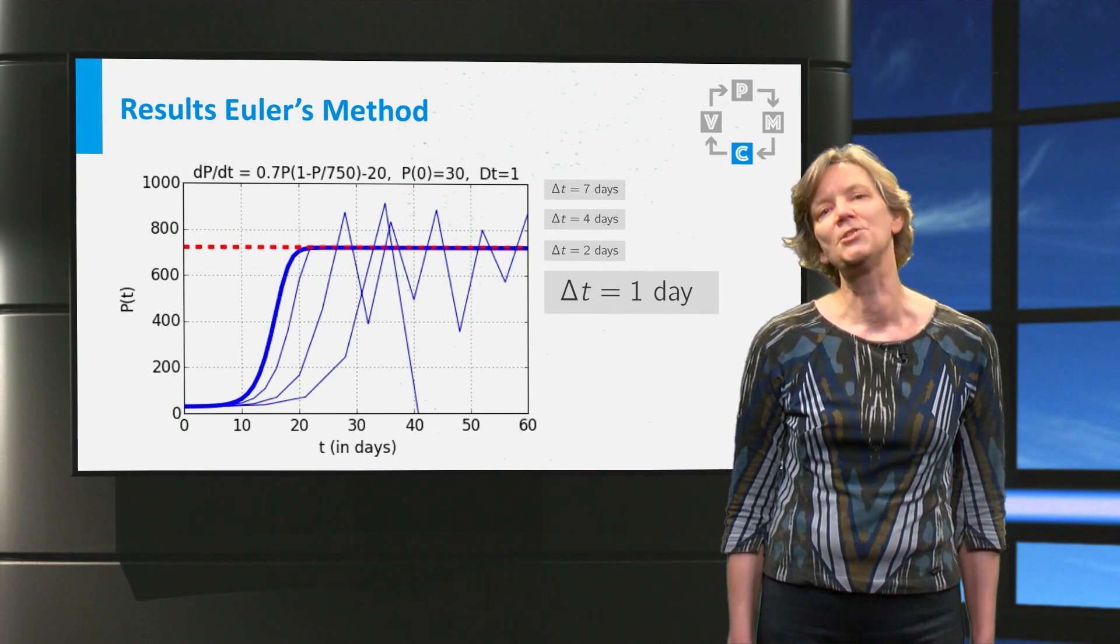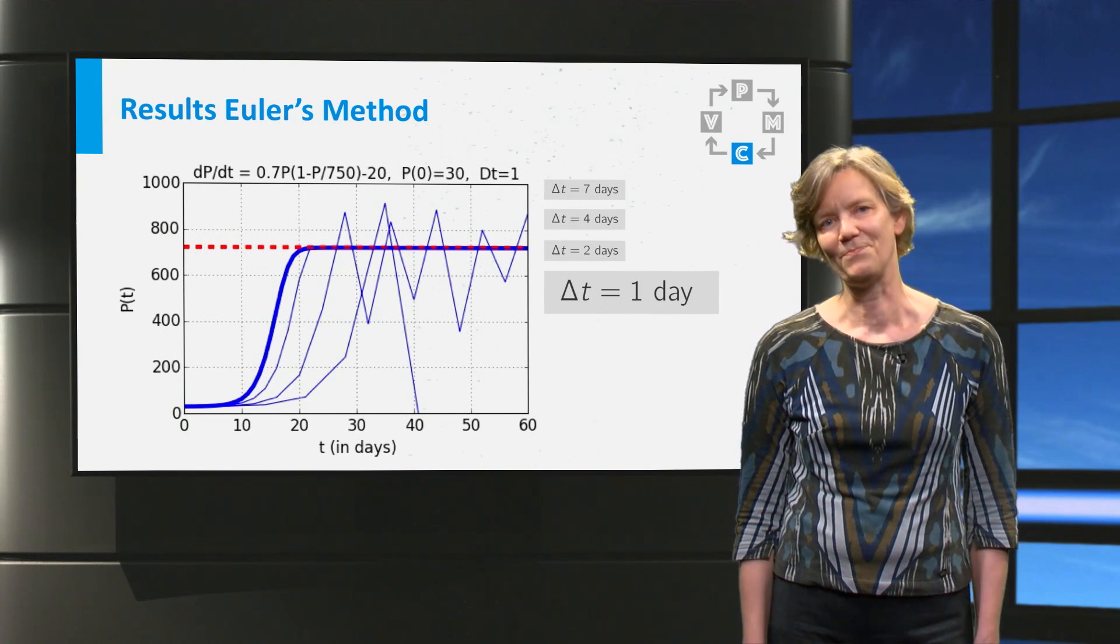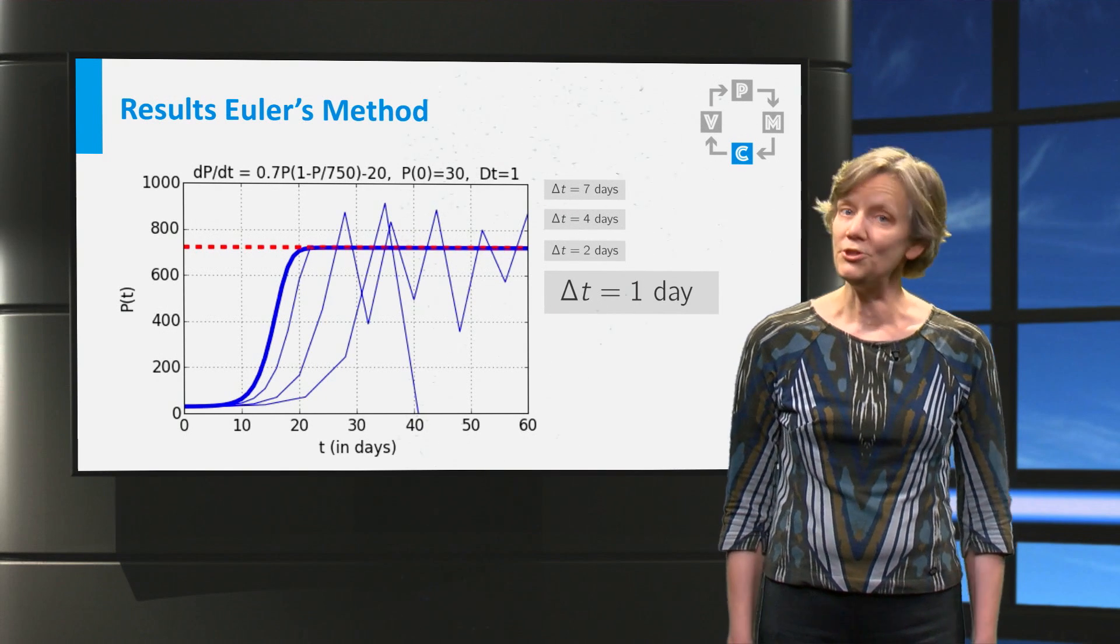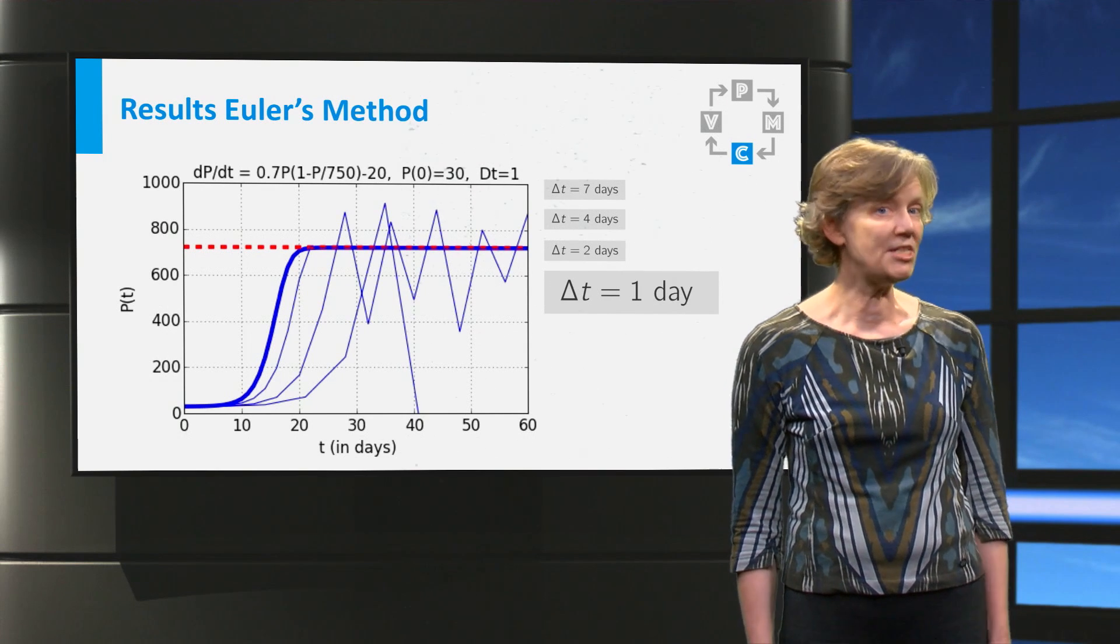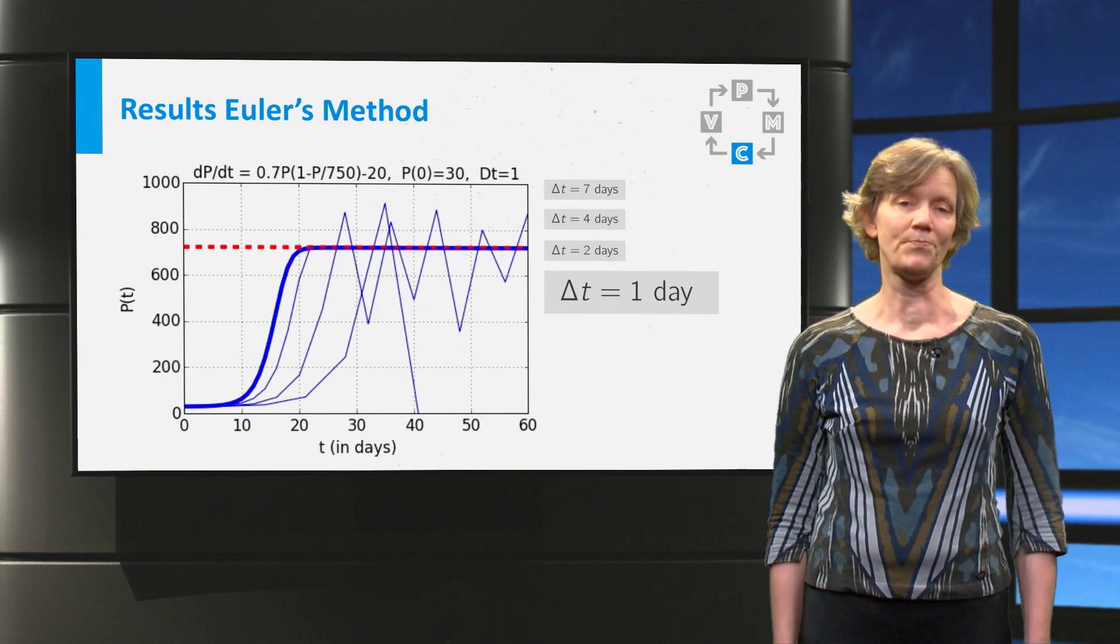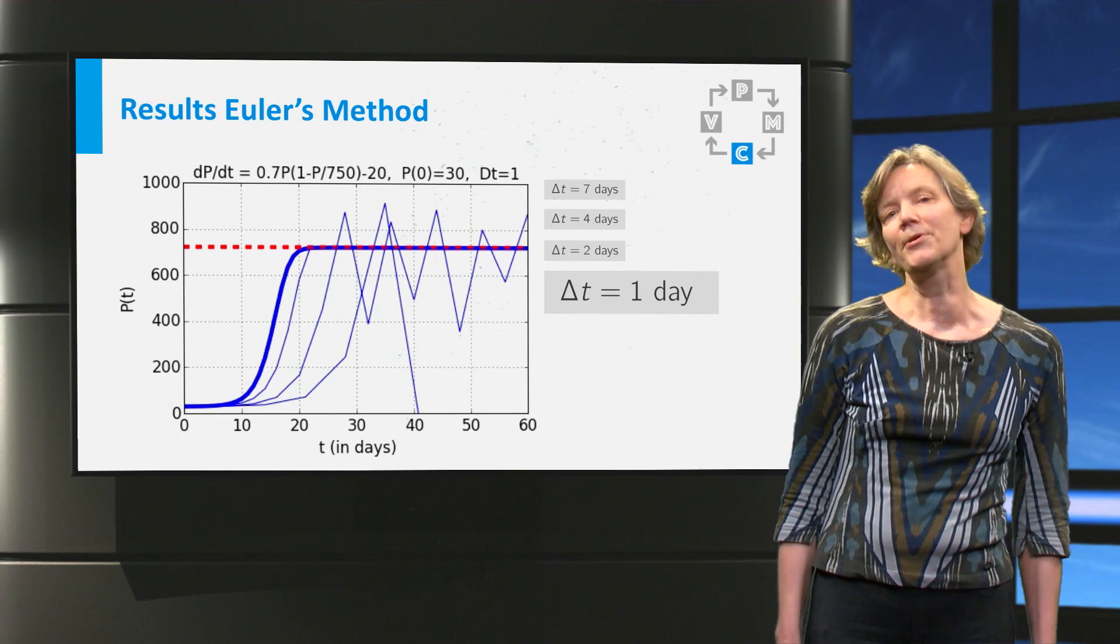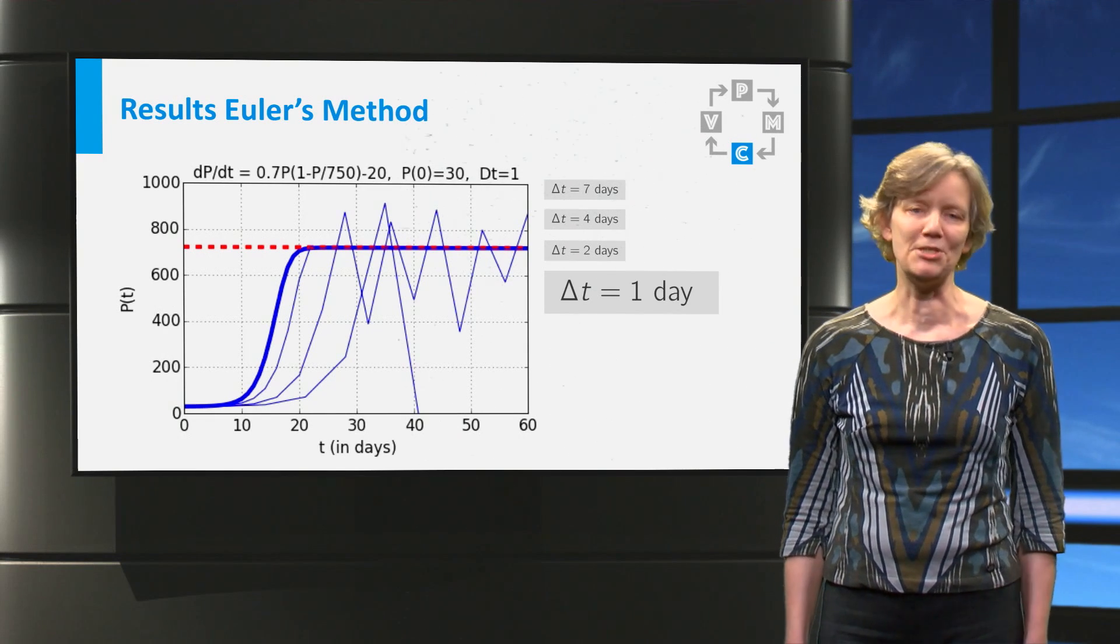Your computer only calculates with a finite number of digits. So you could use a step size much smaller than a day. The question remains, why should you? What is an appropriate step size for our rainbow fish problem?